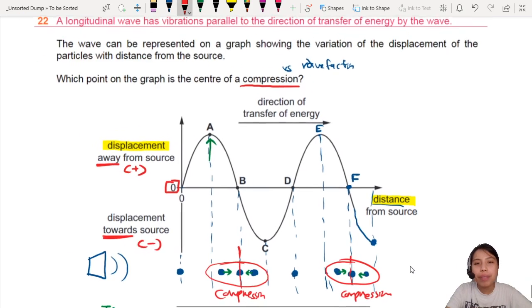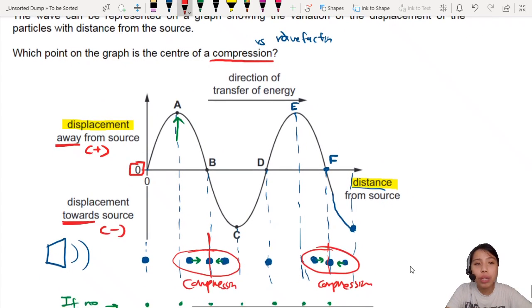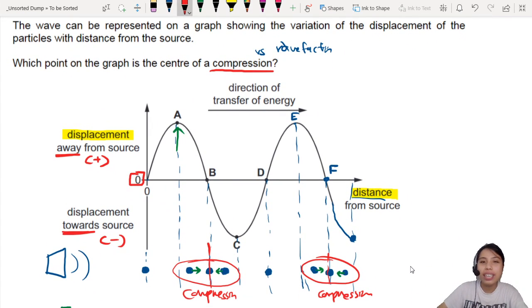So that is this question. Then hopefully that was helpful in imaging. Go and Google search some animated GIFs to see how longitudinal waves look like. And you have an idea of how to imagine these particles getting displaced left and right. That's all for this question. See you in the next one.